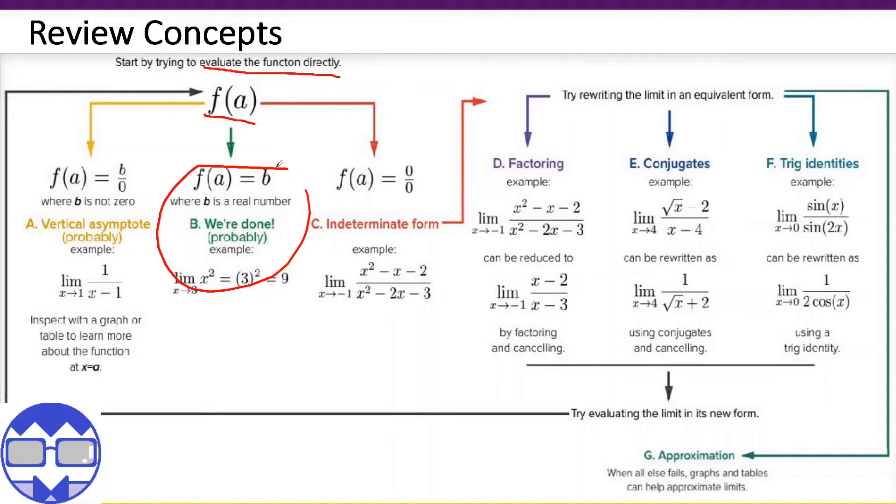We simply substitute a to the function and we get the limit. So for example, we have limit of x squared as x approaches 3. We simply substitute 3 and we will get 9.